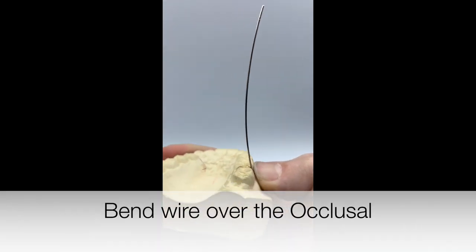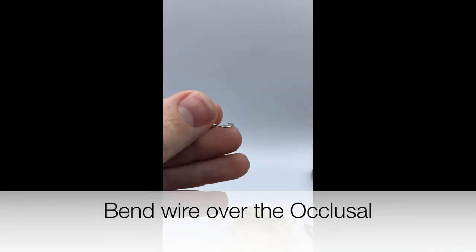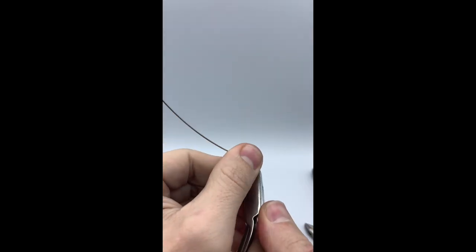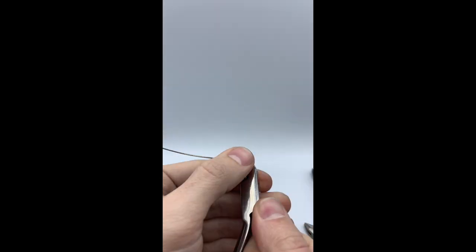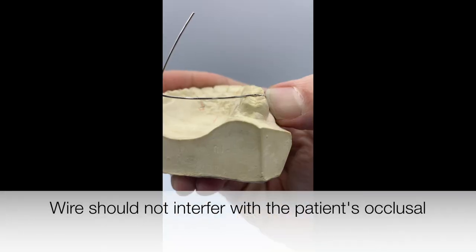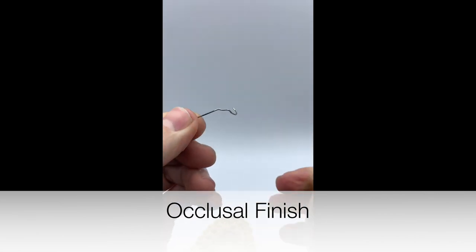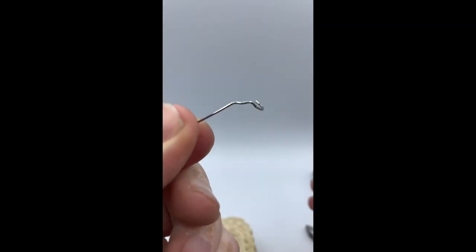Our next step will be to bend over the occlusal surface. We want to make sure to mark the area that we need to bend without interfering with the patient's occlusion. Now you could finish your occlusal in two ways: straight across or you can make an up and down bend to give it the contour of the cusp.